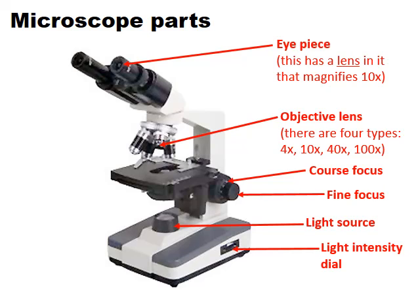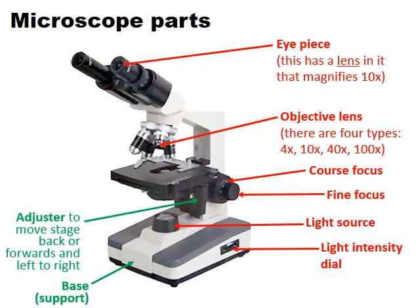Underneath the stage is the light source, and we can modify the intensity using the light dial on the side. This is a light microscope, so light shines through the sample, then passes up the objective lens, up the microscope, and through the eyepiece lens into your eye. There's a base at the bottom to support the microscope, and another adjuster in front of the coarse and fine focus that allows us to move the stage back and forth or left to right.